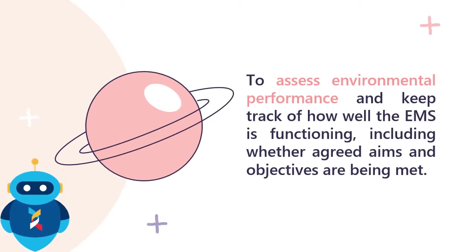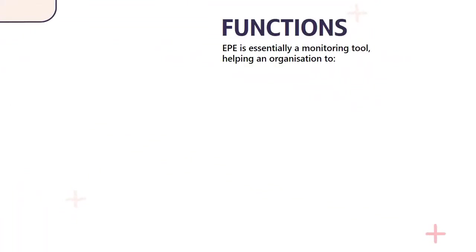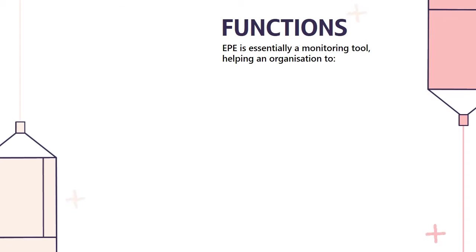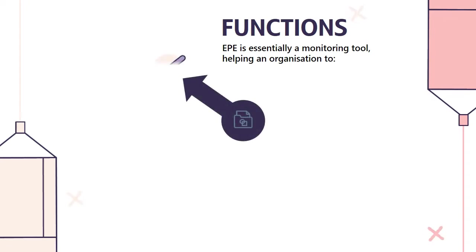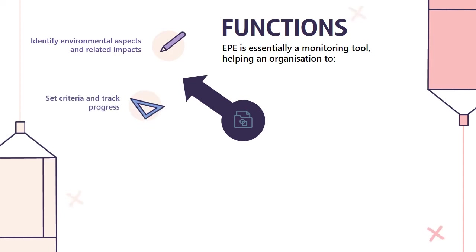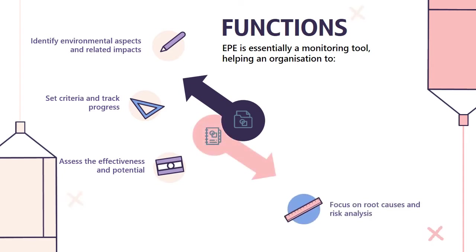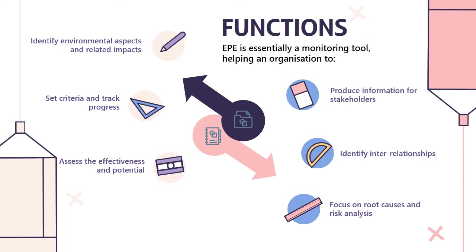Function of EPE ISO 14031: It is to assess environmental performance and keep track of how well the EMS is functioning, including whether agreed aims and objectives are being met. EPE is essentially a monitoring tool helping an organization to identify environmental aspects and impacts, determine which are significant, set criteria for environmental performance, track progress toward objectives and targets, assess the effectiveness of environmental management initiatives, focus on root causes and risk analysis, identify interrelationships of different management functions, and produce information for stakeholders relating to their concerns.